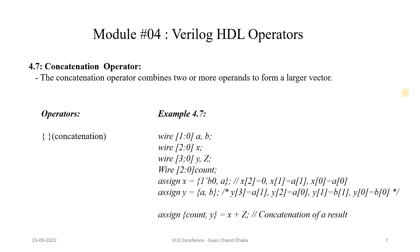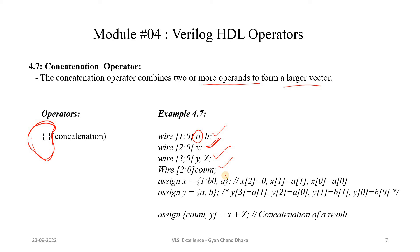Now let's see the concatenation operator. This is a very important operator that combines two or more operands to form a larger vector. For example, if X is a 3-bit variable and A is a 2-bit variable, we can assign X = {1'b0, A}. In the right-hand side, the values are assigned starting from the LSB.